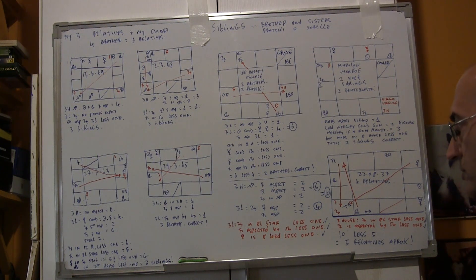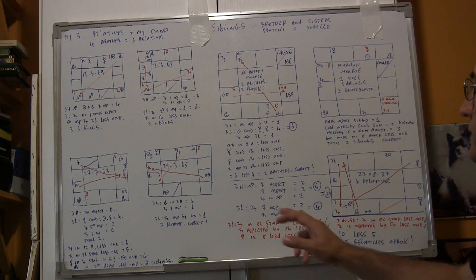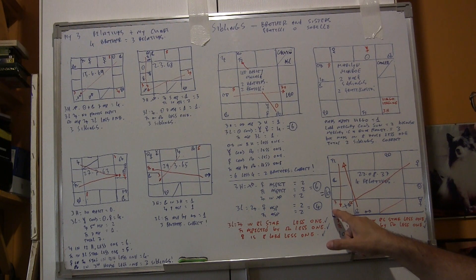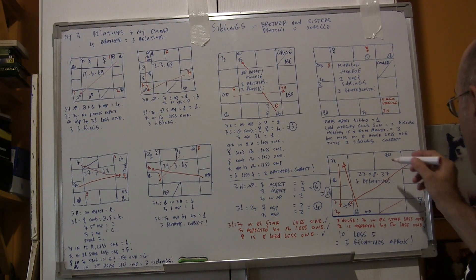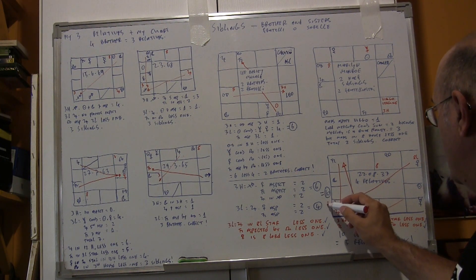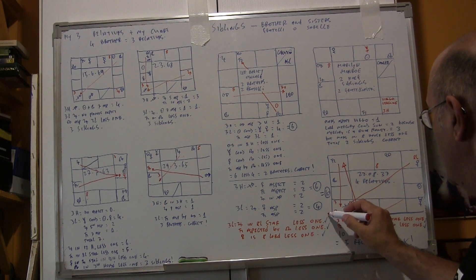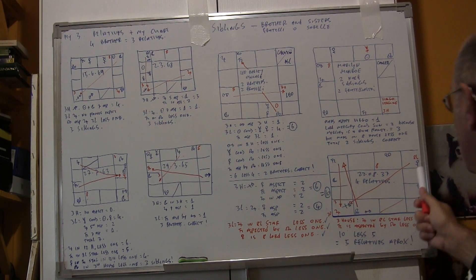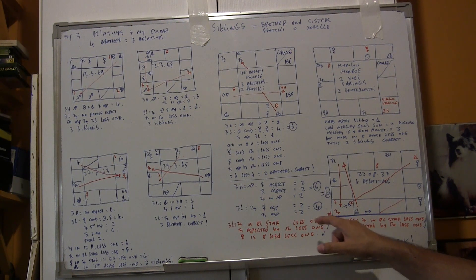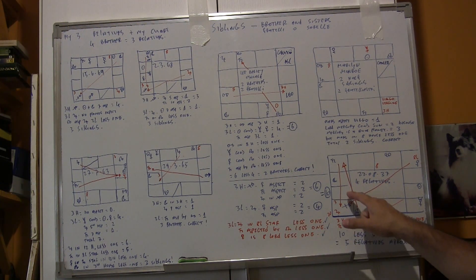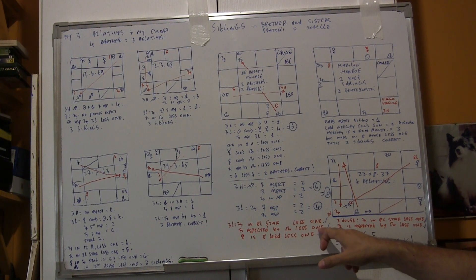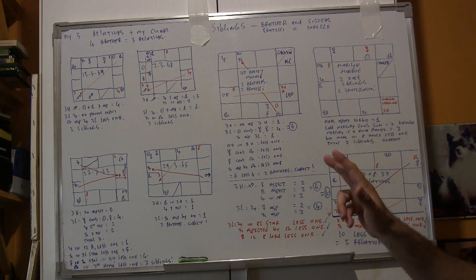Now we have to reduce. Starting from the third lord: Jupiter is in the eighth star in Purvashadha. Venus is in Purvashadha and Venus is the eighth lord, so less one. Saturn is aspected by Rahu — less one. Venus is the eighth lord — less one.